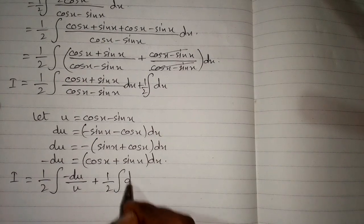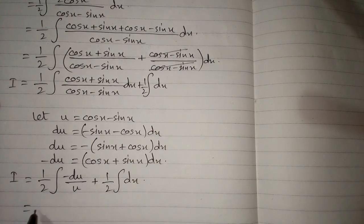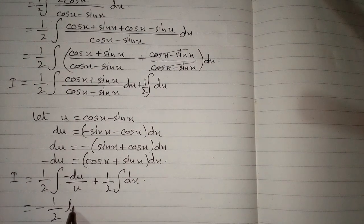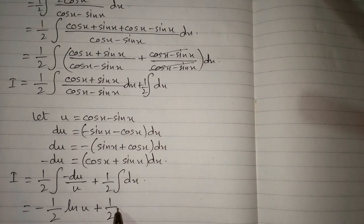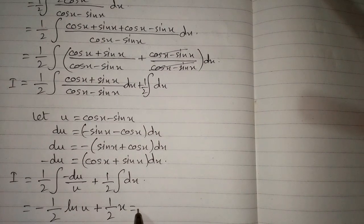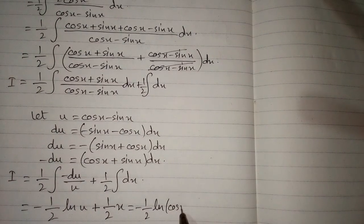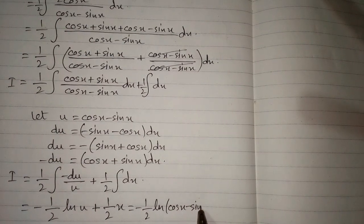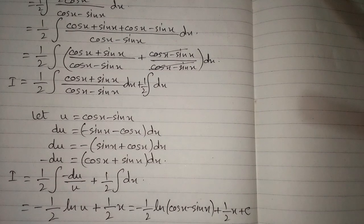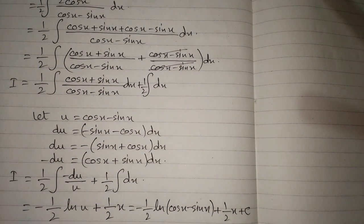The above integral i can be written as half integral of minus du upon u plus half integral of dx. This minus can be written before half, so we have minus half, and the integral of du upon u is ln of u, plus half integral of dx is x. Now we put the value of u, so we have minus half ln of cos x minus sin x plus half x plus c, where c is the constant of integration, and this is the required answer.